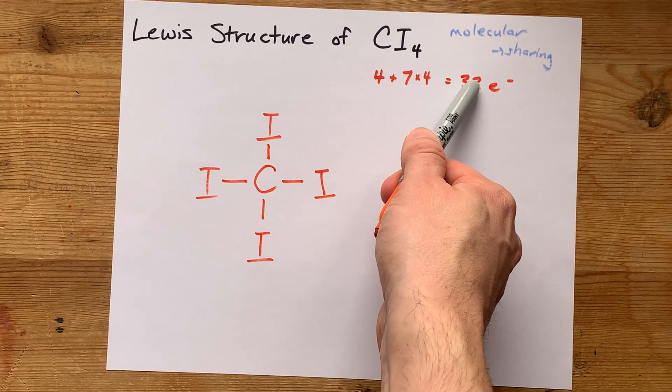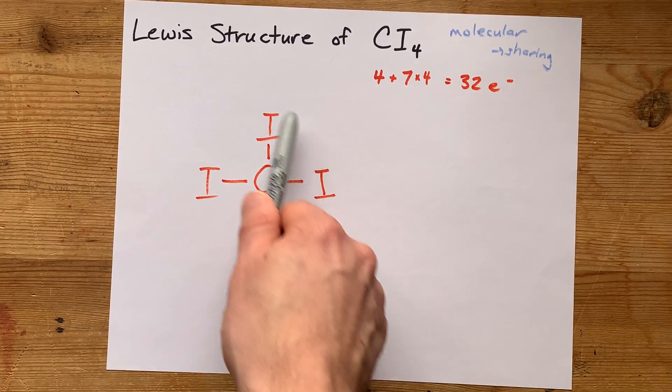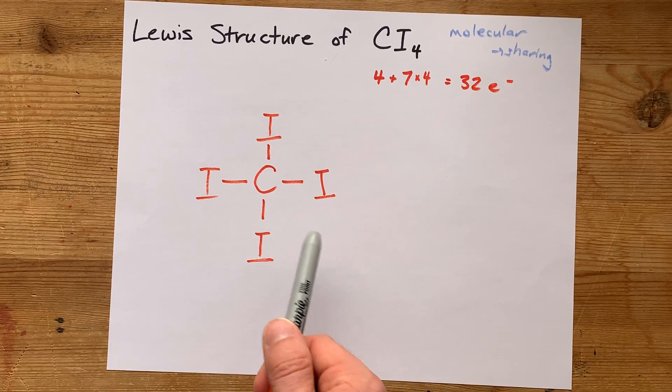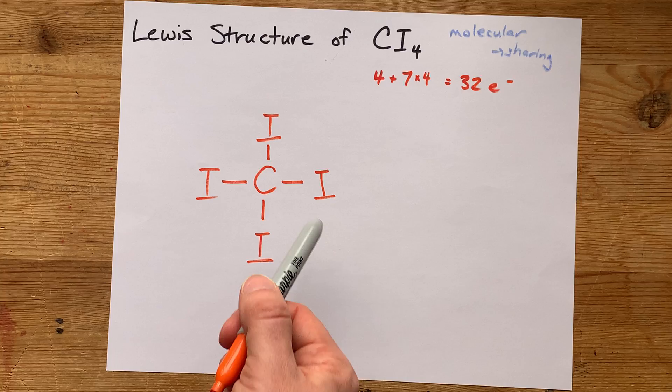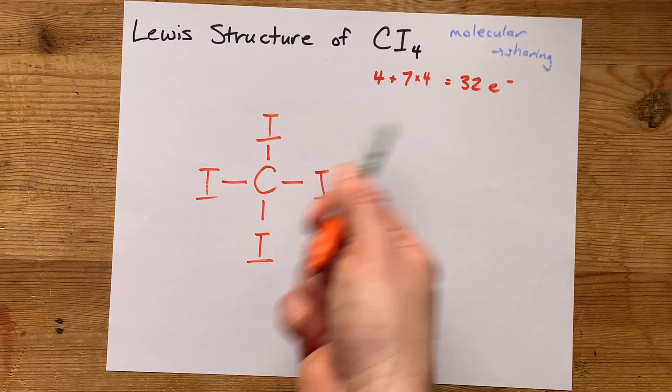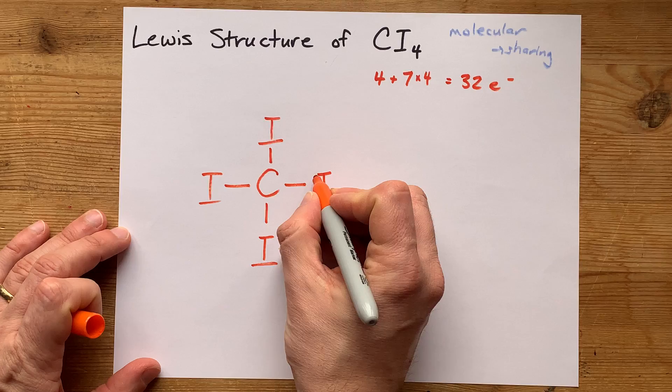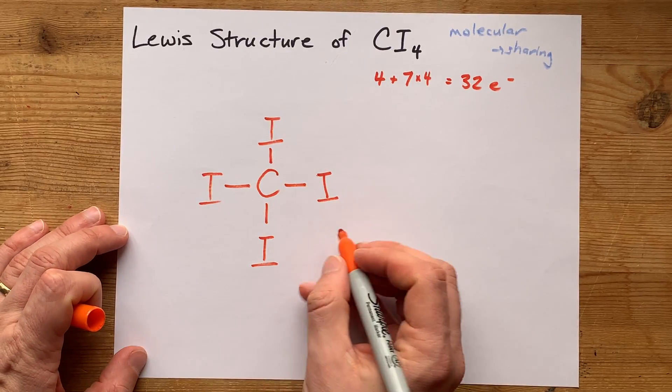Now, of course, I need 32, and I don't have complete octets on the outer atoms yet, so I'm going to fill the outer atoms as octets and count up to 32. Let's see if it fills all the iodines. We already have eight written here.